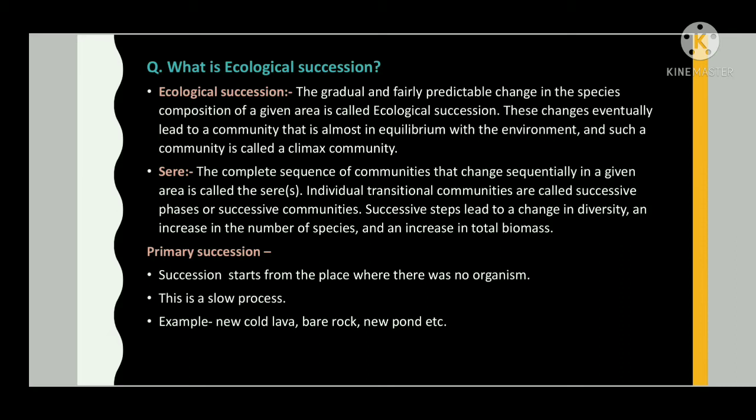What is ecological succession? The gradual and fairly predictable change in the species composition of a given area is called ecological succession. These changes eventually lead to a community that is almost in equilibrium with the environment, called a climax community. The complete sequence of communities that change sequentially in a given area is called the sere. Individual transitional communities are called successive phases or successive communities, leading to a change in diversity, an increase in the number of species and total biomass.